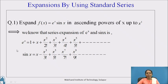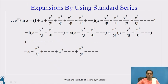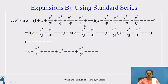In the previous slide, we have seen the expansion of e^x and sin(x), and the same is written here. Therefore, the product e^x · sin(x) equals, on the RHS, in the first bracket I have written e^x in expanded form, multiplied by the second bracket containing sin(x) in expanded form. Therefore, taking the product of the two brackets term by term.